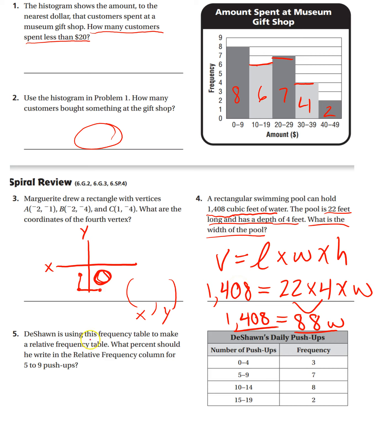Number five, Deshawn is using this frequency table to make a relative frequency table. What percent should he write in the relative frequency column for five to nine push-ups?